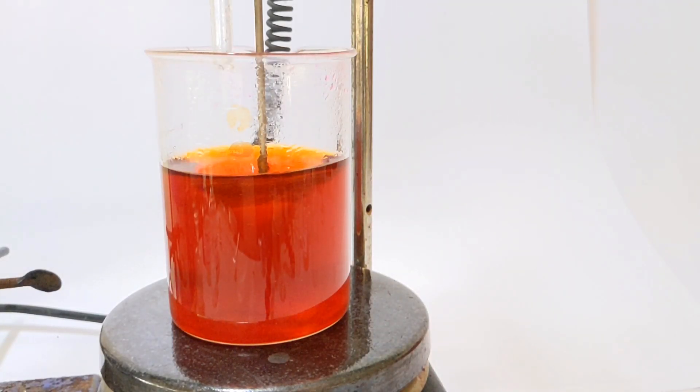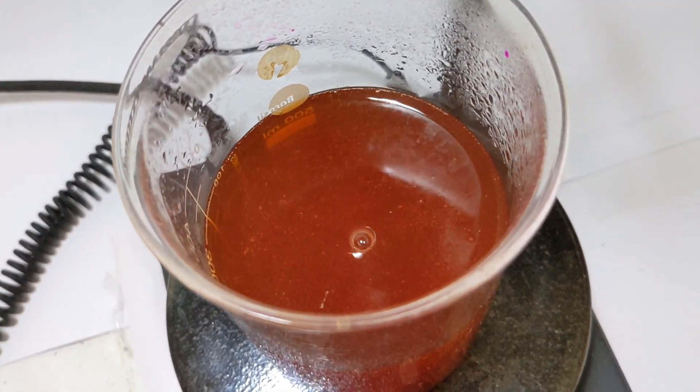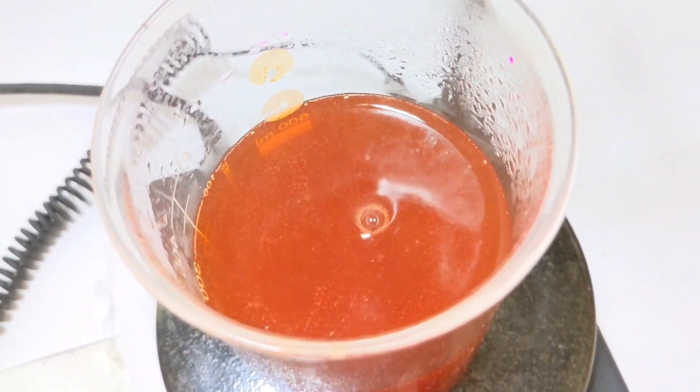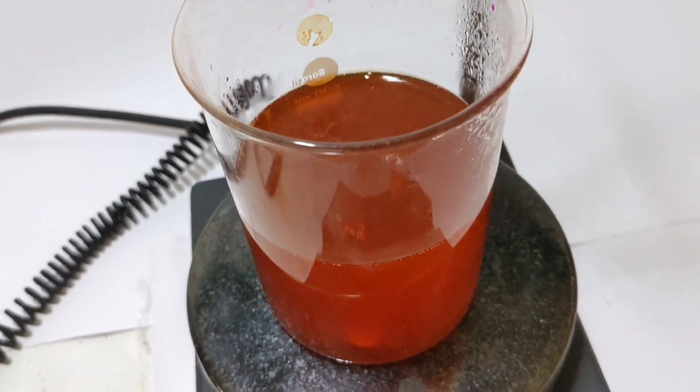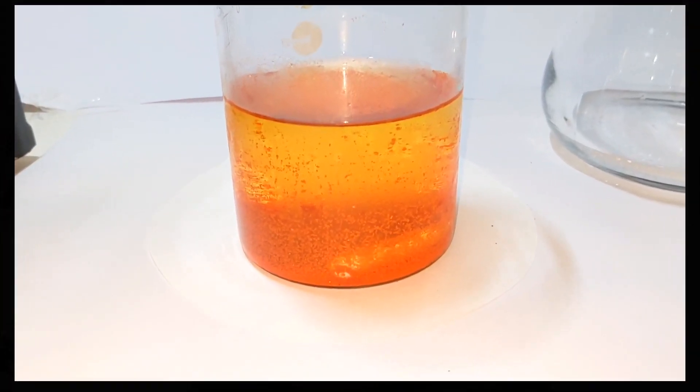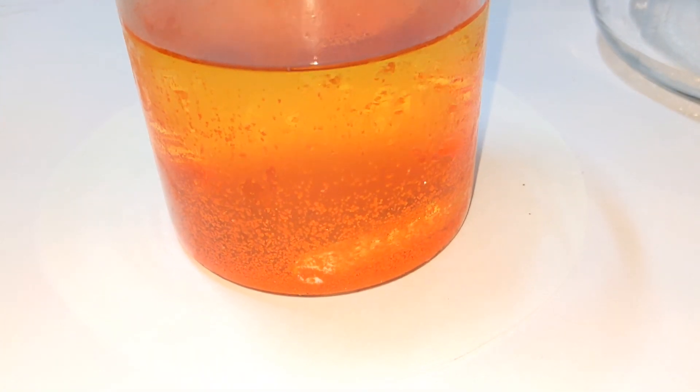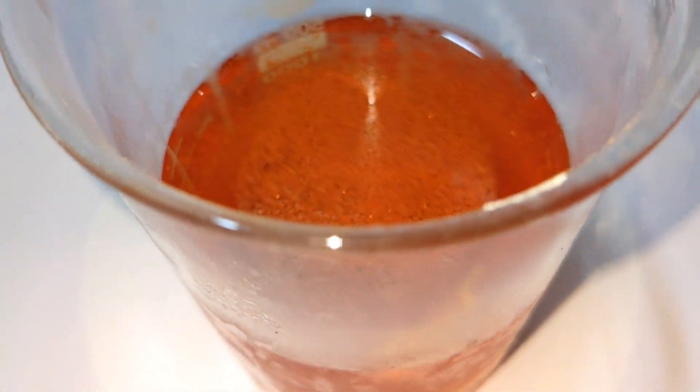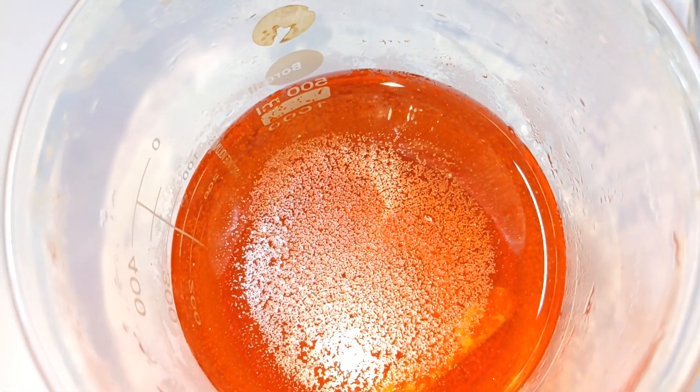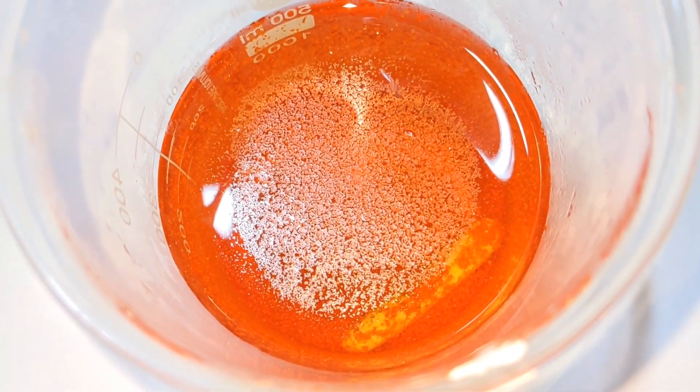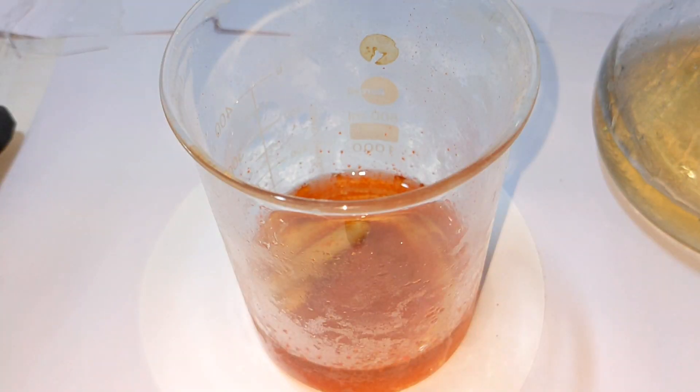Heating was then stopped and the beaker was allowed to come down to room temperature. By that time some of the crystals already started precipitating out. The beaker was then placed in refrigerator overnight and as you can see, a lot of crystals came out of the solution. Many crystals got stuck onto the walls of the beaker and they were also scraped off using the flat end of a metal spatula.